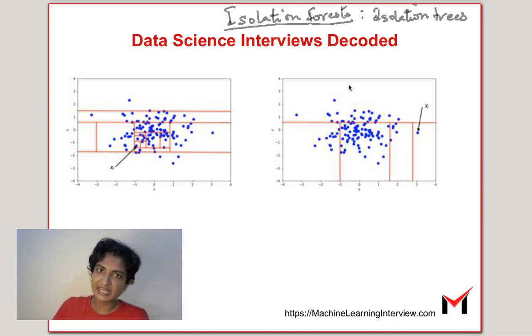The whole intuition behind isolation trees is that a regular point is much harder to isolate than an anomalous point. What do we mean by this? Suppose we take the data set and randomly keep selecting a feature and randomly keep partitioning on that feature somewhere along the range of that feature. An anomalous point is going to be isolated much sooner.